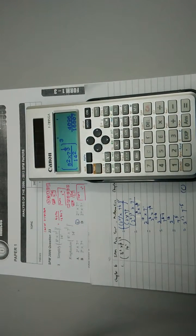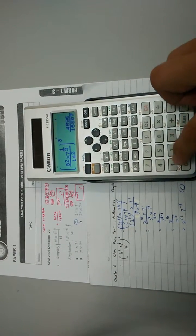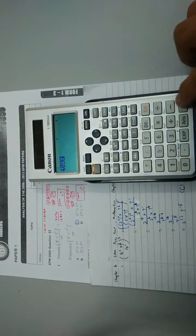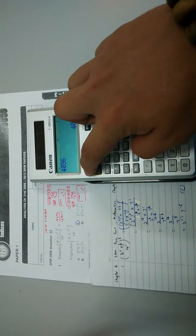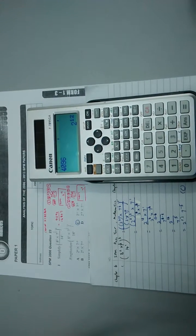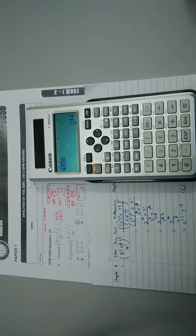One is using prime factorization. So I have the 4096, and then I use the P fact, and it will give me 2 to the power of 12.